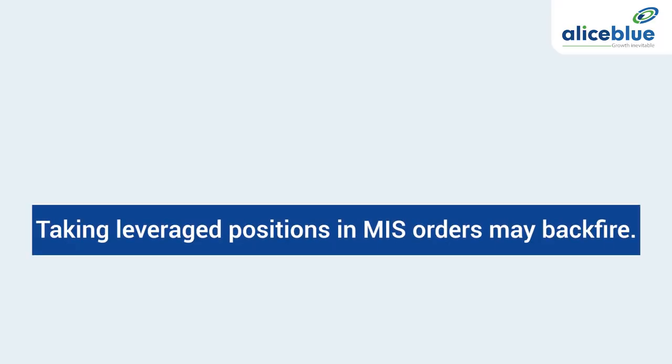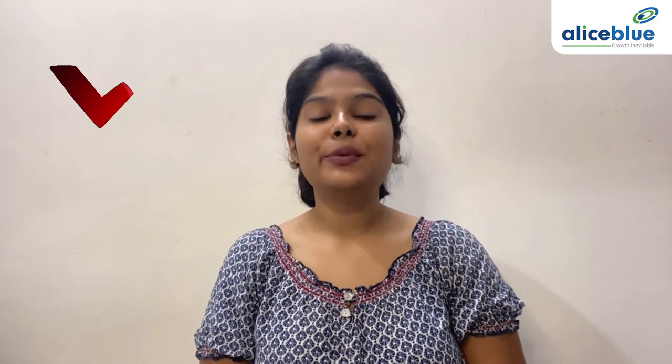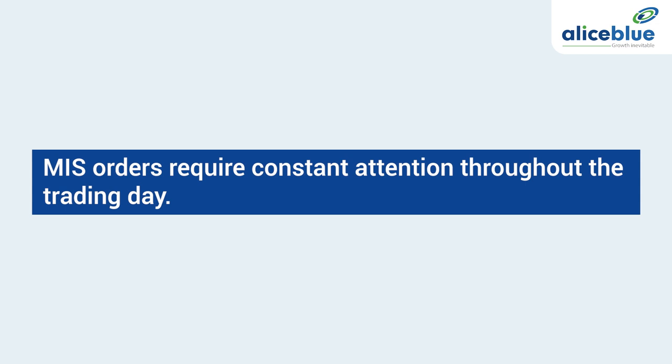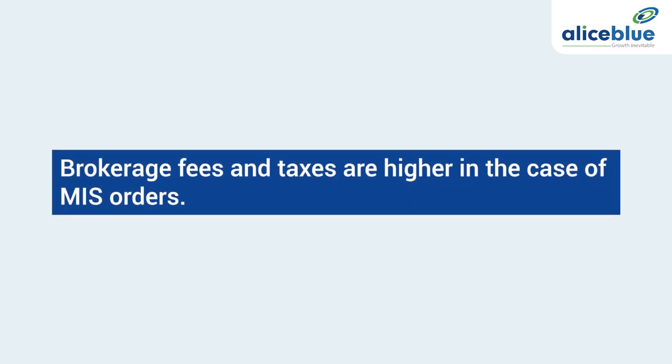There are also a few disadvantages of MIS order. Taking leveraged positions in MIS order may backfire. If the stock reacts opposite to what you had expected, your losses could be huge. Not only would you lose your own money, but you would also have to pay back to your broker. MIS orders require constant attention throughout the trading day. Brokerage fees and taxes are also higher in the case of MIS orders.